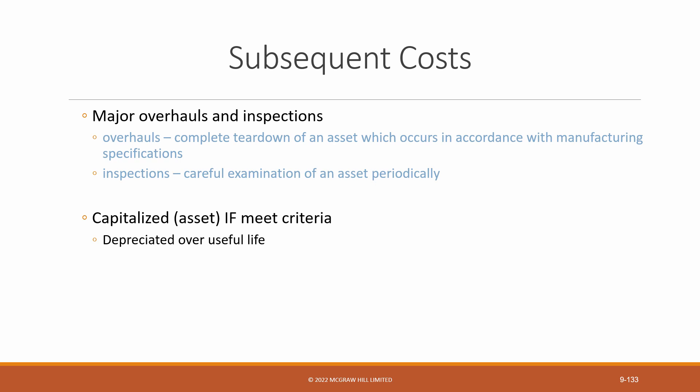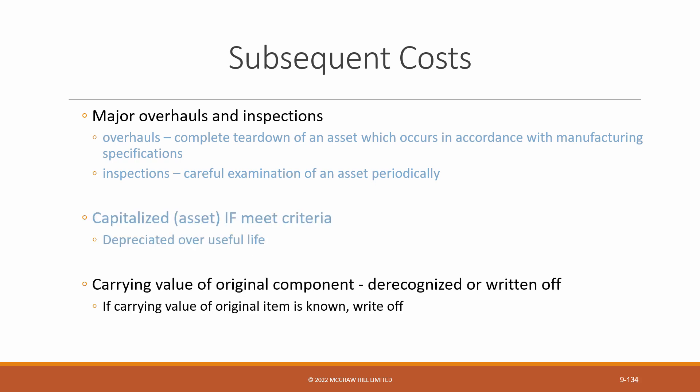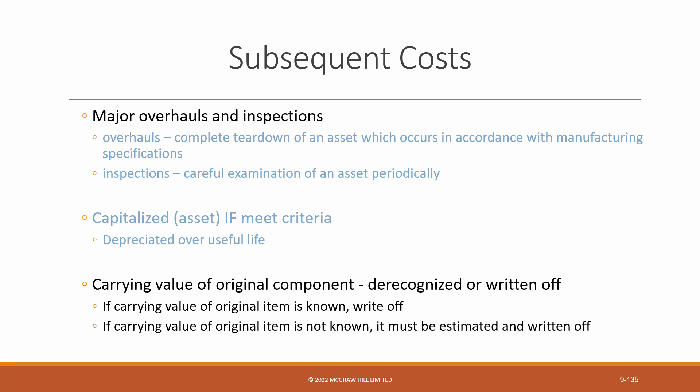This only happens if the overhaul or inspection lasts for more than one period. For example, if an inspection is completed every three years for airplane engines, then it can be capitalized and depreciated over the three years until the next inspection. Similar to replacements, the carrying value of the previous overhaul or inspection must be de-recognized or written off when the subsequent overhaul or inspection takes place. If the carrying value of the original overhaul is not known, then it must be estimated and written off. I'm going to do a separate video with an example of how to record major overhauls and inspections.